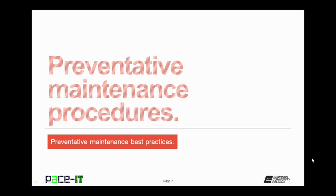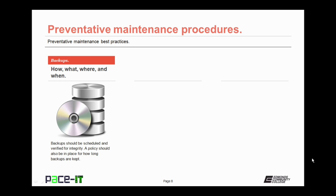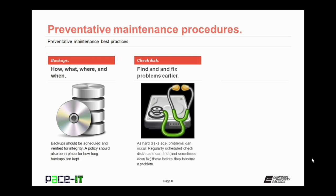Now let's move on to some maintenance procedure best practices. Backups should be scheduled and verified for integrity. A policy should be in place for how long backups are kept and what kind of backups are maintained. Check disk: as hard disks age, problems can occur with the integrity of the physical surface. Regularly scheduled check disk scans can find and sometimes repair these problems before they become an issue to the user. You should run regularly scheduled check disk scans.